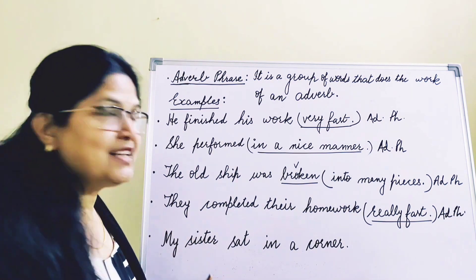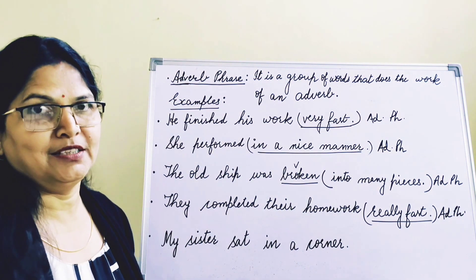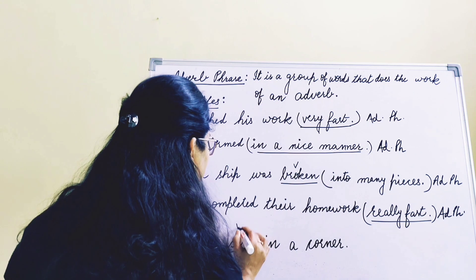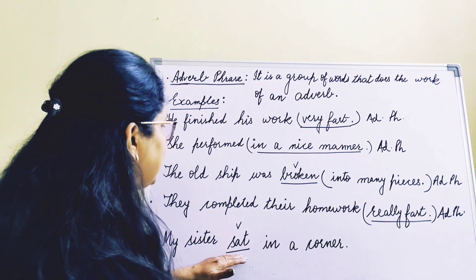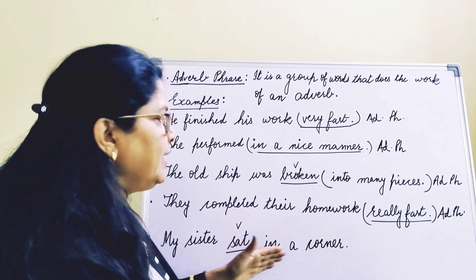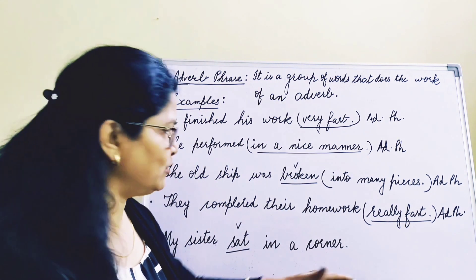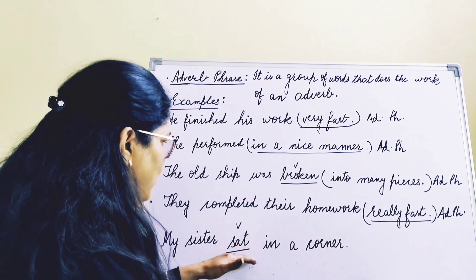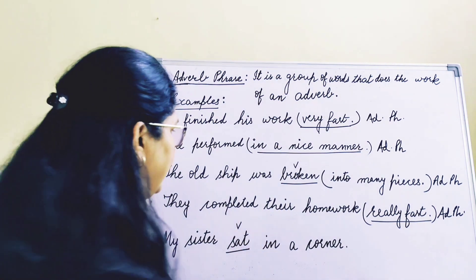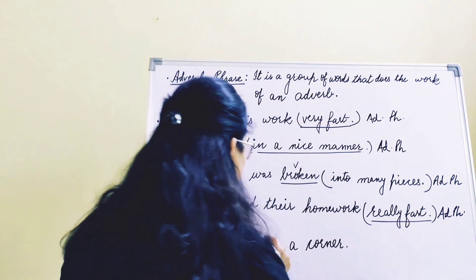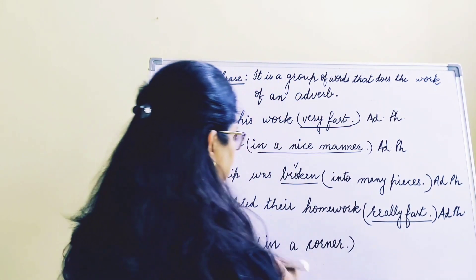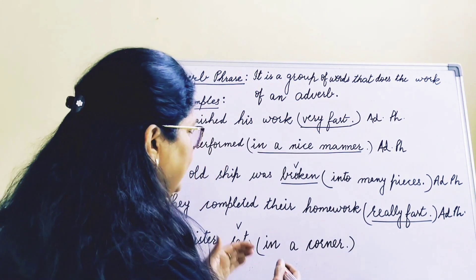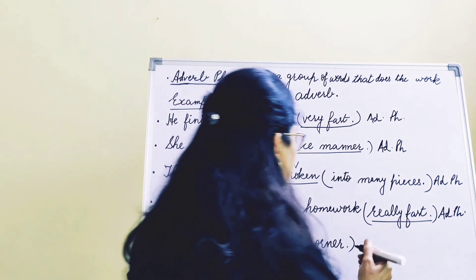Fifth example: 'My sister sat in the corner.' My sister sat — sat where? In a corner. So 'in a corner' is describing the verb sat. Sat where? In a corner. So 'in a corner' is a group of words, and it is an adverb phrase.